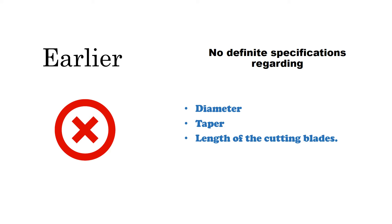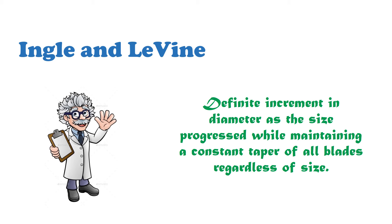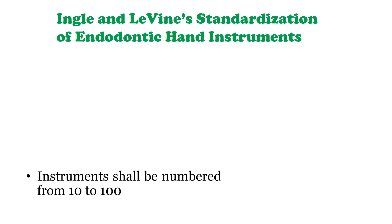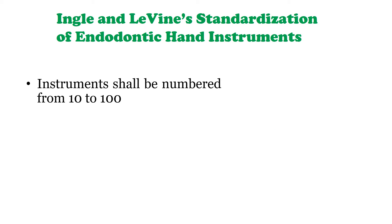There were no specifications for taper or the length of the cutting blades. Therefore, Engel and Levine suggested a definite increment in the diameter as the size progressed — meaning there was a definite increase in diameter moving from, say, a number 10 to a number 15 or number 20 file. Regardless of the size of the file, the taper was constant.